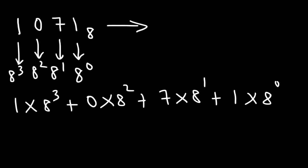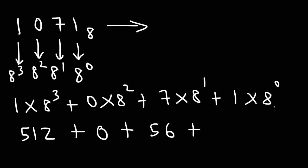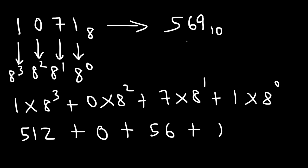8 cubed is 8 times 8 times 8, which is 512. 0 times 8 squared is 0. 7 times 8 is 56. And 8 to the 0 power is 1, so 1 times 1 is 1. So we have 512 plus 56 plus 1, and that's going to be 569 in the base 10 system.